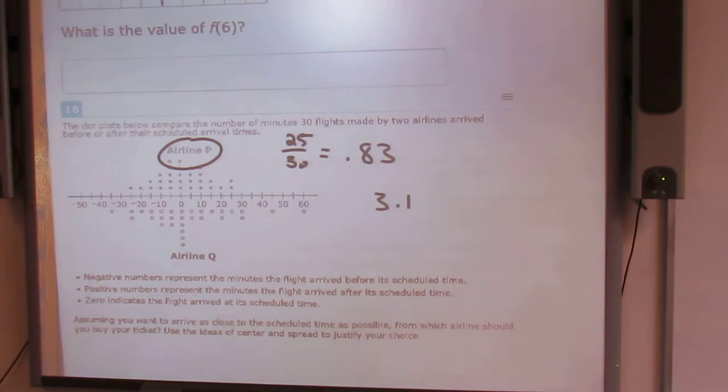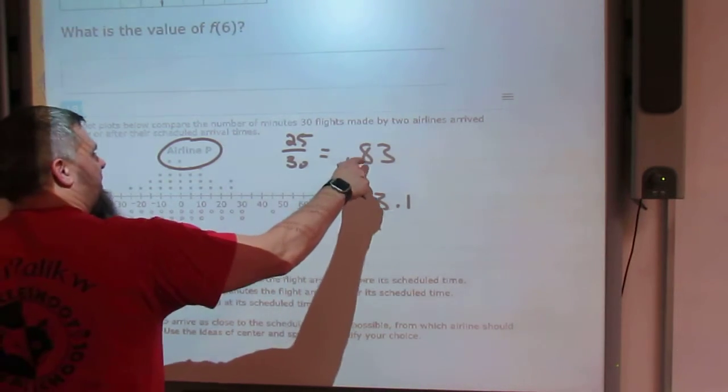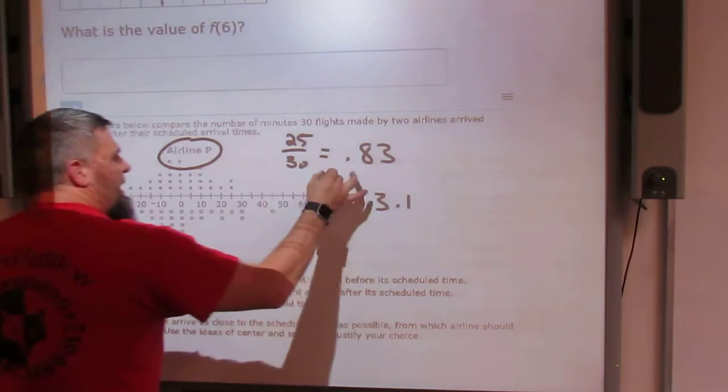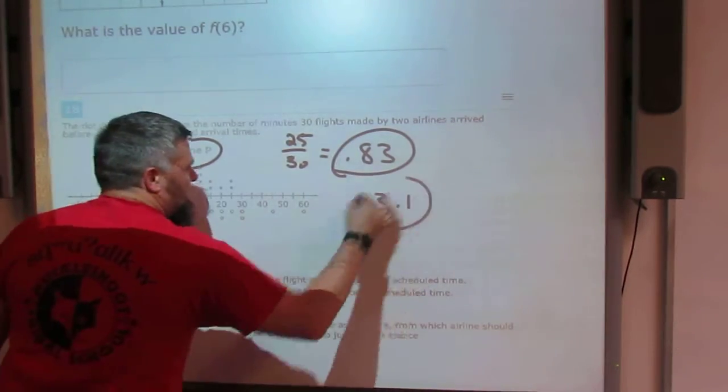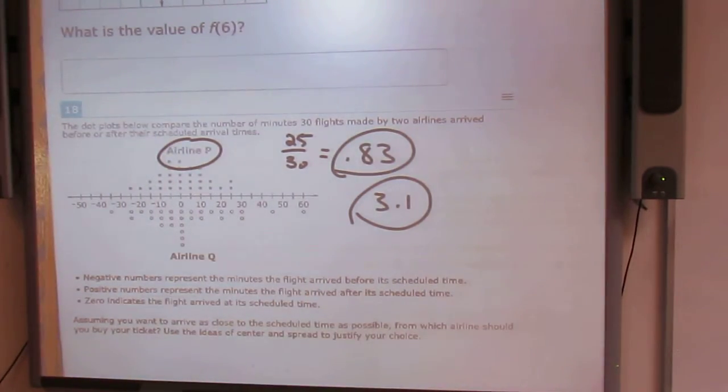So we're positive, so we're late by point. So we're late by less than 1 here, 1 minute. We're late by more than 3 minutes here on average. So therefore, your best bet would be airline P.